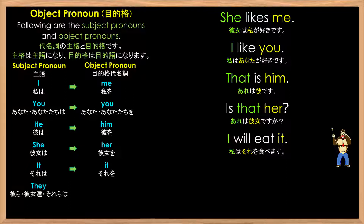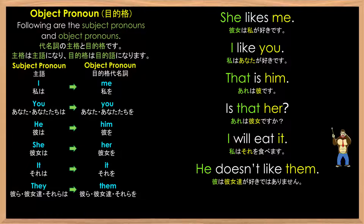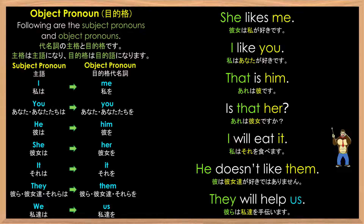Next we have they, which changes to them, as in 'he doesn't like them.' And lastly we have we, which changes to us, as in 'they will help us.' So as you notice, the subject pronoun and the object pronoun, in most cases, is different.